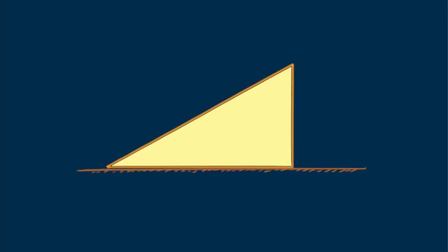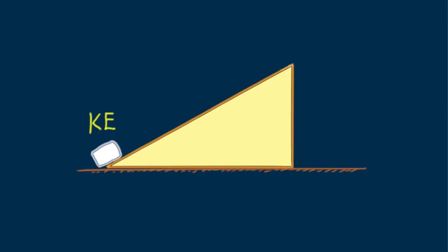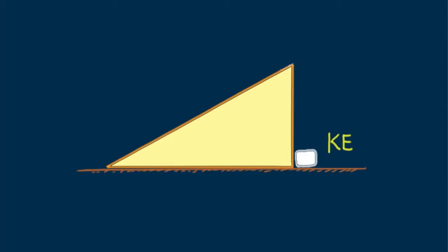Recall the block of ice with potential energy at the top of the ramp. The block's potential energy had to do with its vertical height, not the path to get there. When the block slides down the ramp, its potential energy transforms to kinetic energy, and the kinetic energy gained is the same at the bottom whether it slides down or falls vertically from the edge. The potential energy transforms completely to kinetic energy whatever the path.